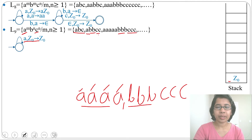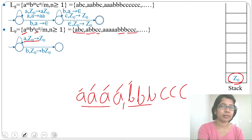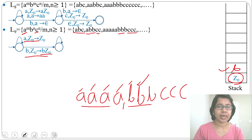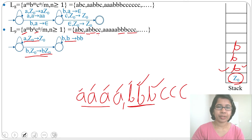Next, for b we push onto the stack. With input b and topmost stack symbol Z0, we push b above Z0: (b, Z0) → bZ0. For the next b, topmost symbol is now b, so we make a self-loop: (b, b) → bb, pushing b above b. We repeat this for all three b's, pushing 3 b's onto the stack.